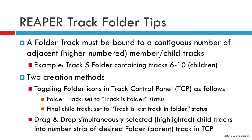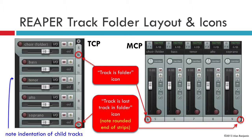Then go to the final desired child track in the construct and click on that folder icon until it's set to the track as last track in folder status. The second method is drag and drop. Here we select or highlight the intended child tracks in the track control panel and drag them upwards, releasing in the intended folder track.